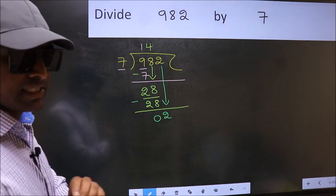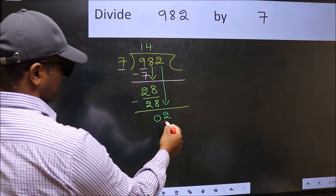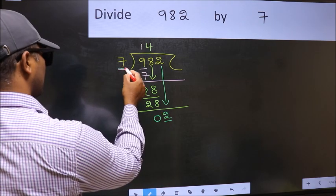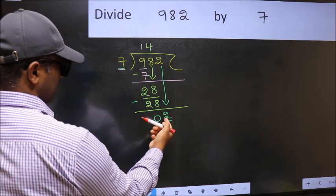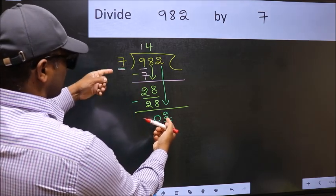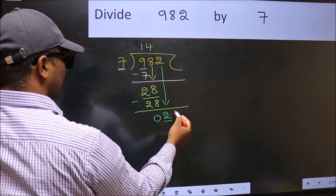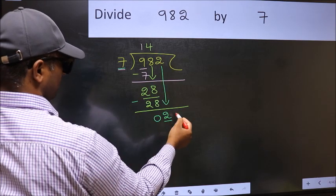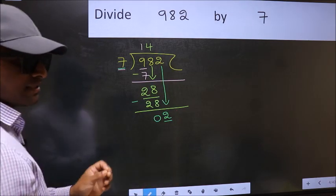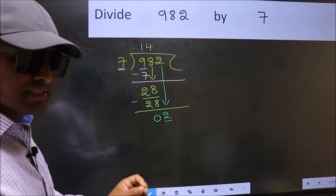And the mistake is this. Here we have 2 and here 7. 2 is smaller than 7. So what many do is they directly put dot and take 0, which is wrong.